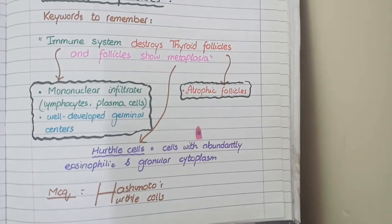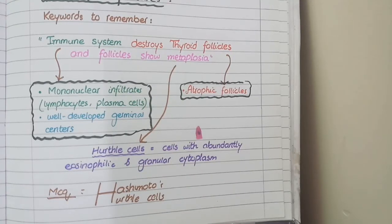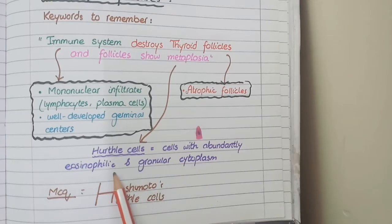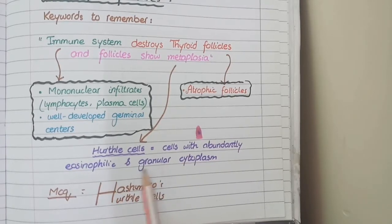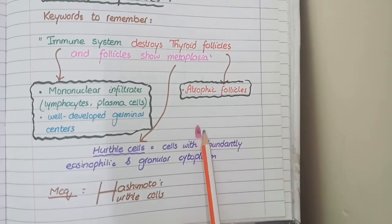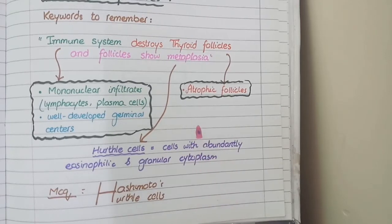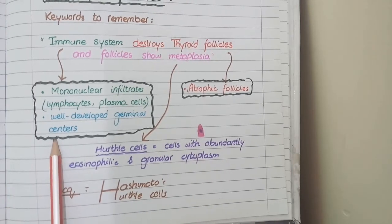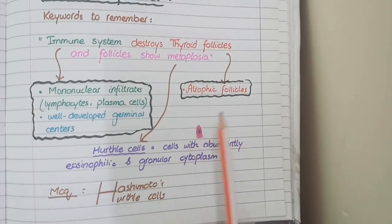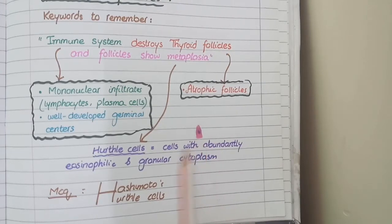The third keyword was follicles showing metaplasia. In response to the ongoing damage, some cells of follicles change their size from low cuboidal to columnar, increase their secretory activity, and appear granular. They develop a lot of mitochondria and appear intensely eosinophilic. Such cells are called Hurthle cells or oxyphil cells. On microscopic picture you see mononuclear cell infiltration with germinal centers, atrophic follicles, and Hurthle cells that are intensely eosinophilic with granular cytoplasm.